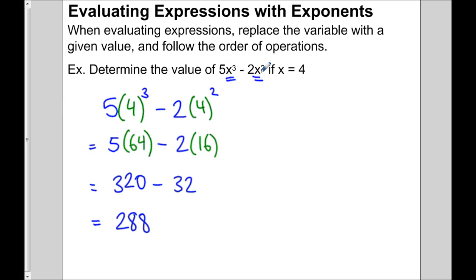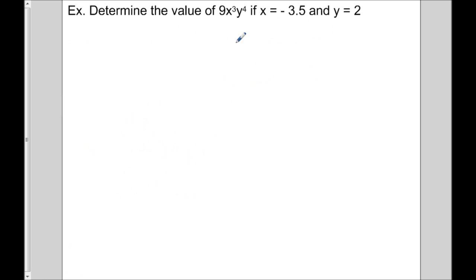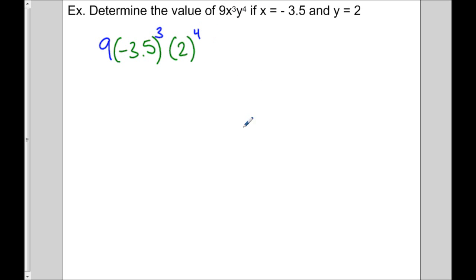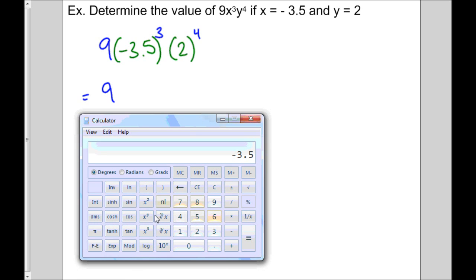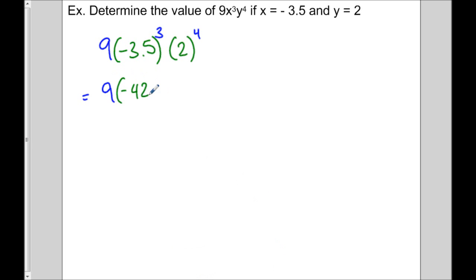We replace the variable with the given value. Let's do another example. Here we have two different variables, but each has a value given to us. We're going to replace x with negative 3.5, and that is raised to 3. The value of y is given to us as 2, so we replace y with 2 and raise that to an exponent of 4. Before we do any multiplying, we evaluate the powers. So negative 3.5 raised to a power of 3 is negative 42.875.